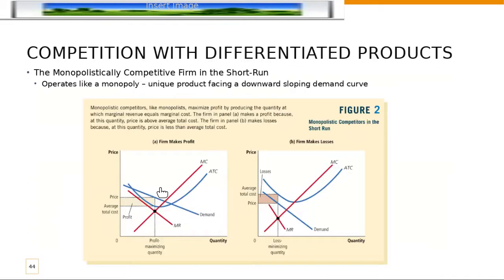So how does competition with differentiated products work? The monopolistically competitive firm in the short run operates a lot like a monopoly. It has a unique product facing a downward sloping demand curve. Since the monopolist is the only seller of their product, they face demand for their specific fast food burgers. Wendy's, for example, faces the question of how many people want their hamburgers and how much are they willing to pay. They price where marginal revenue equals marginal cost, then trace up to the demand curve to find the price, and as long as that price is greater than average total cost, the firm makes a profit.